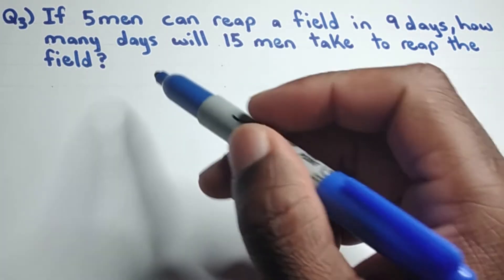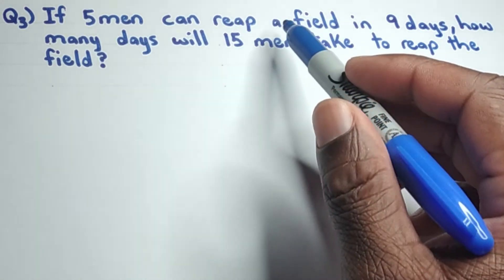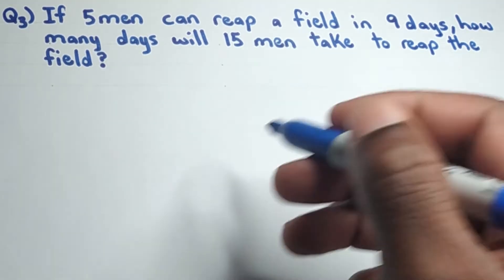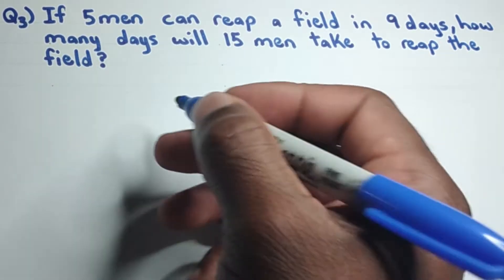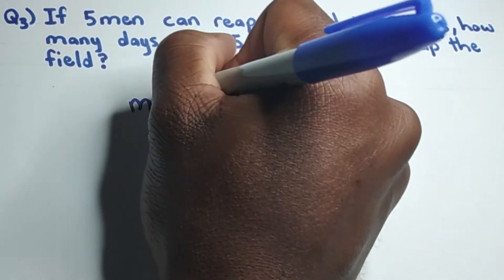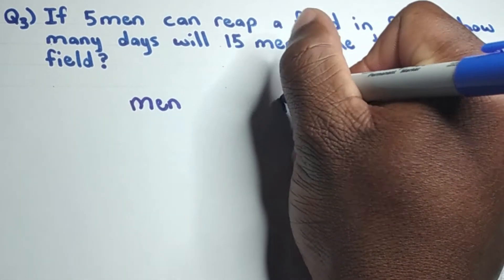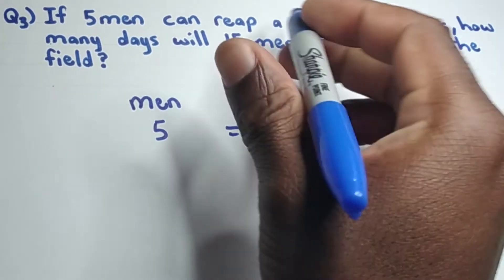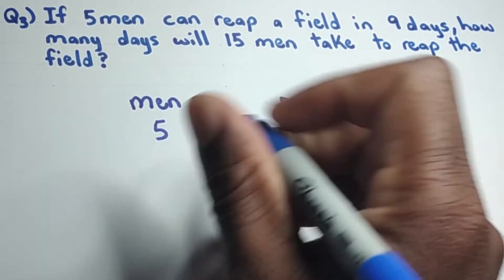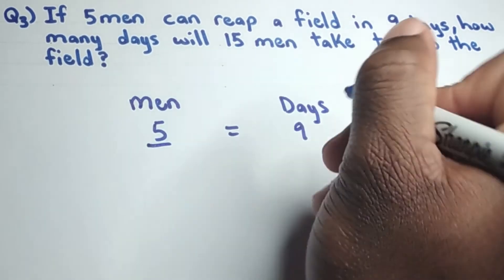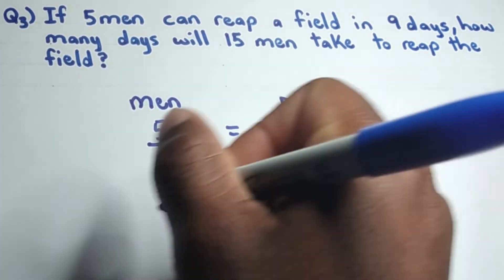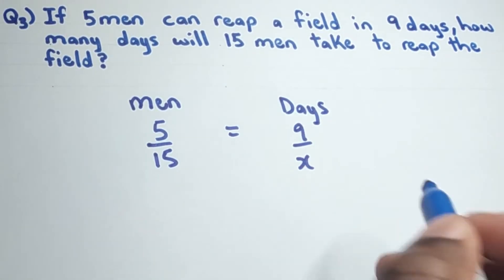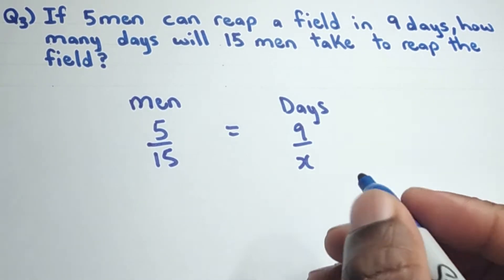Question 3: If five men can reap a field in nine days, how many days will 15 men take to reap the field? The two variables are men and days. We know five men can reap the field in nine days, and we need to find x — the number of days it will take 15 men.